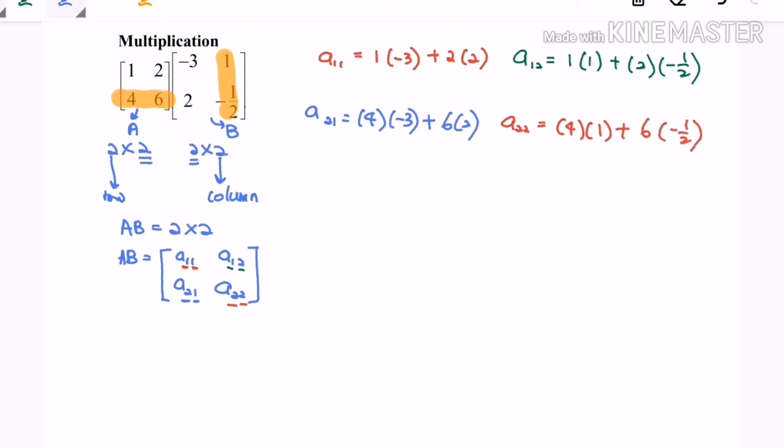So with the help of a calculator, the product of AB will equal negative 3 plus 4, which is 1. 1 minus 1 is 0. Negative 12 plus 12 is 0. 4 minus 3 is 1. So the product of AB will equal 1, 0, 0, 1, or we can say the identity matrix. So here we are, and thanks for watching.